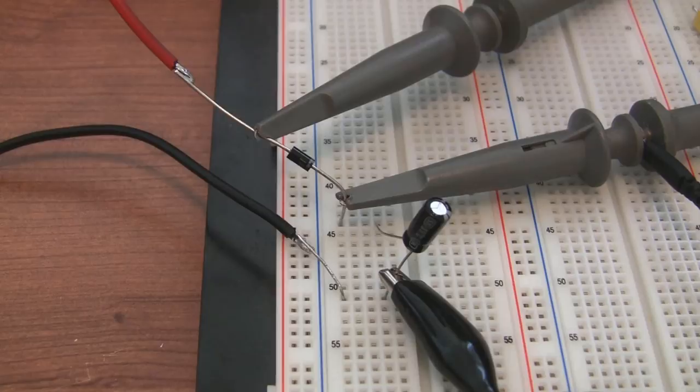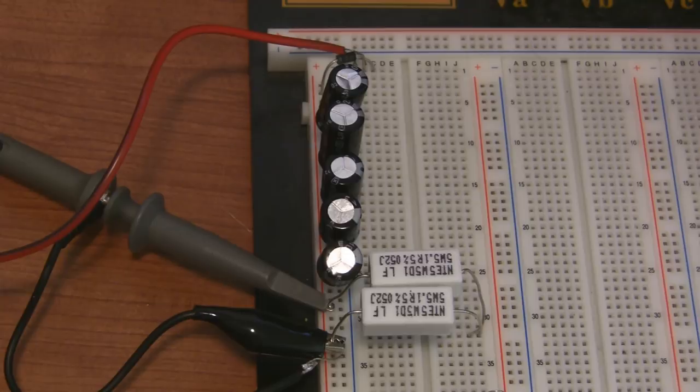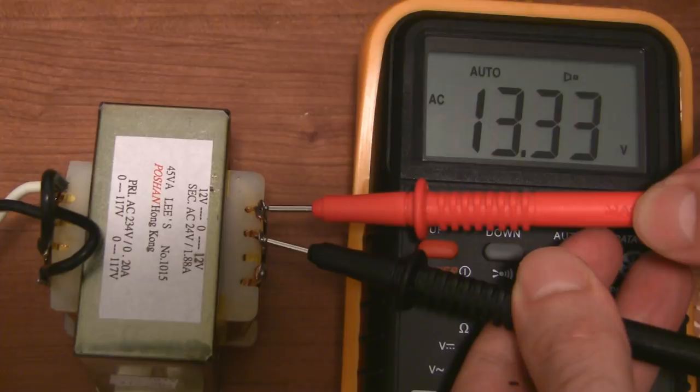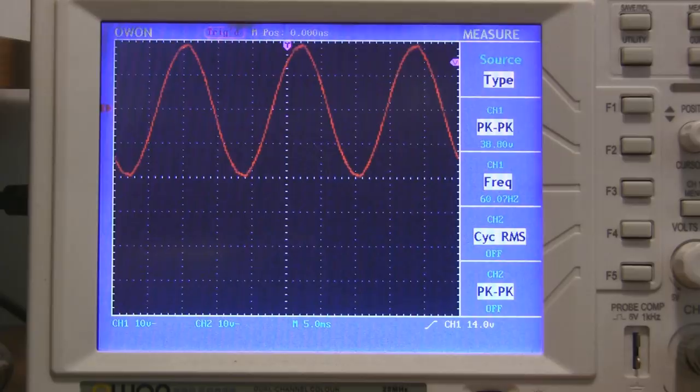I'll start with a very simple low current supply, and then I'll show you how to improve on the design so that it can handle heavier loads. You start out by stepping mains voltages down to a lower, safer AC voltage. I showed you how to do that in my tutorial about transformers. With zero load, my transformer is giving me a nice clean sine wave of around 39 volts peak-to-peak at 60 Hz.